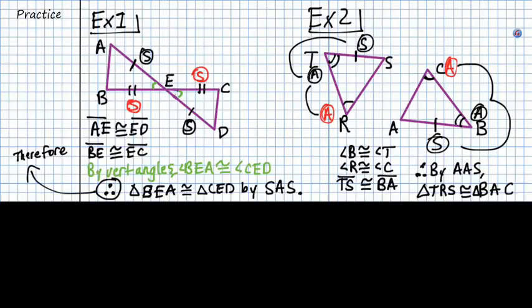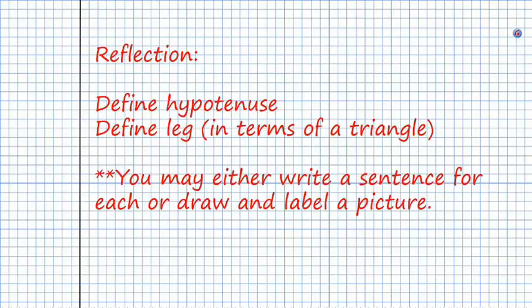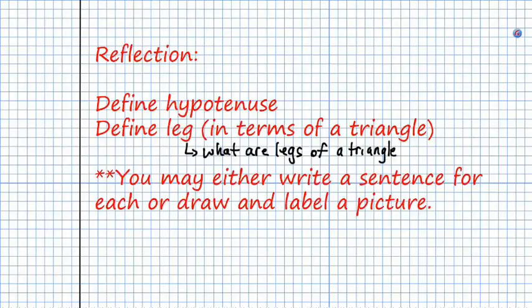That's the end of our notes for today. Your reflection is to define the hypotenuse and also define a leg in terms of a triangle — what are the legs of a triangle? You can do this by either writing a sentence or drawing and labeling a picture. If you have any questions, let me know. Have a wonderful day, goodbye!